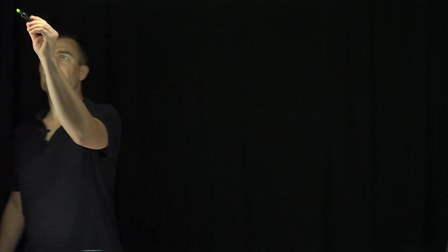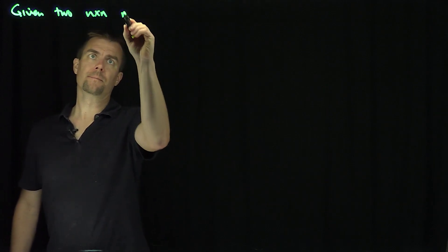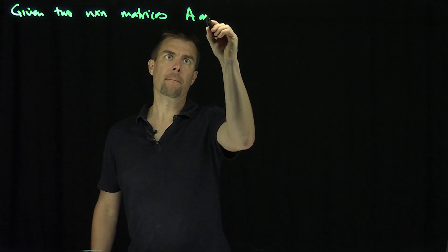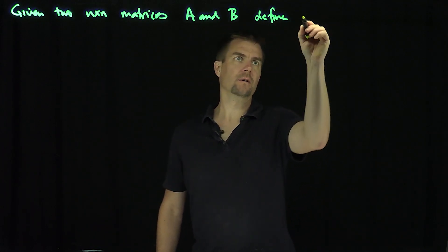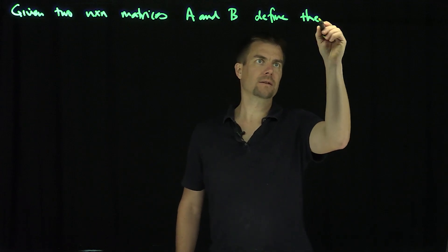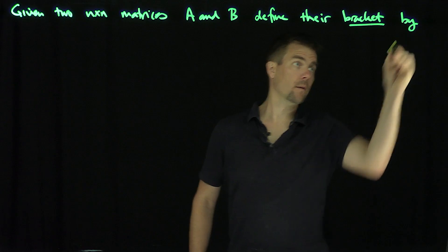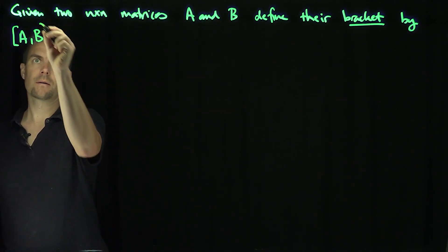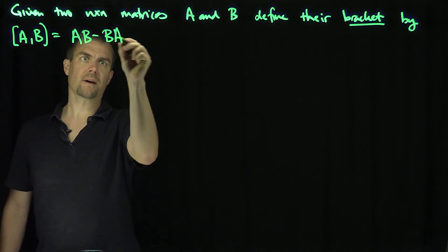Hello, students. In this video, we'll consider the commutator of two matrices. Let's be given two n by n matrices A and B, and what we're going to do is define their commutator — their bracket — by: the bracket of A and B is A times B minus B times A.